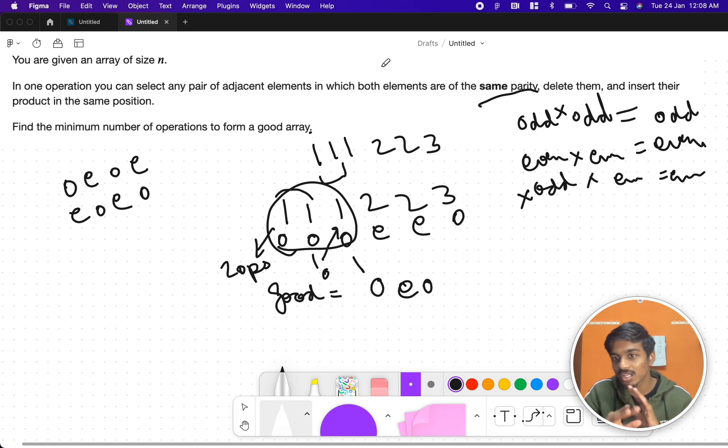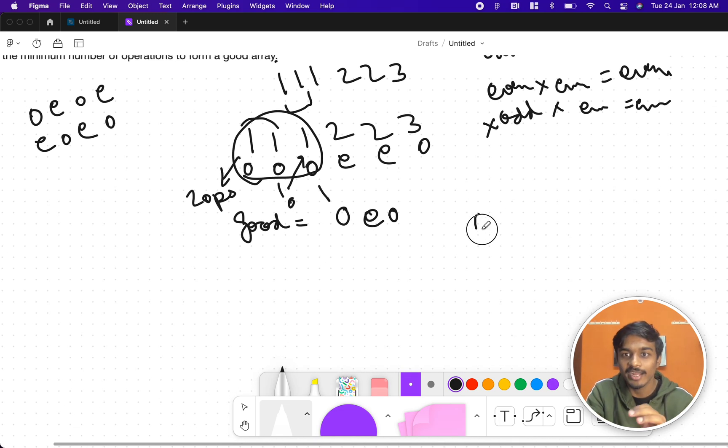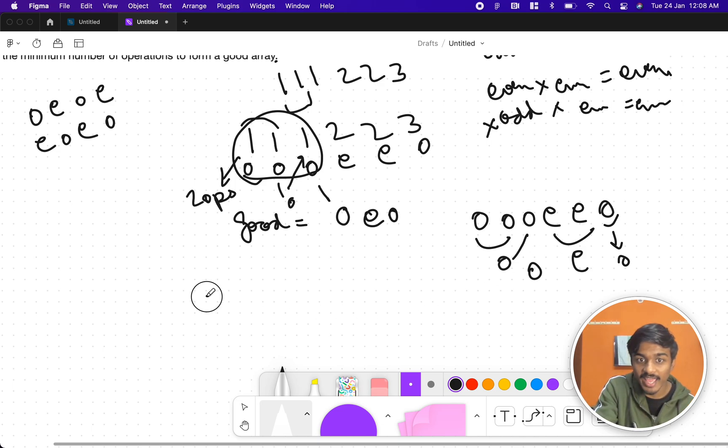One more thing is they are not asking value anywhere here. So in order to further simplify this, we'll write only the parity. Now odd into odd is odd. Odd into odd is again odd. Odd into even doesn't matter, it is already good here. Even into even is even and odd will simply drag it down. We are not performing any operation. So what do we get from here? If there are x number of odds or x number of evens, you get x minus 1 operations. You have to perform x minus 1 operations.